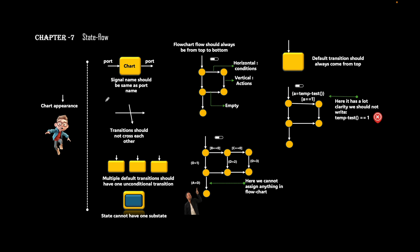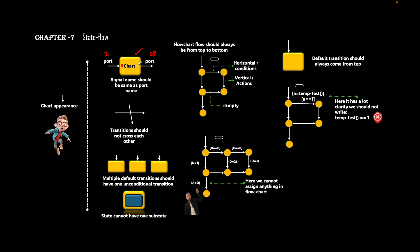Coming to chart appearance: suppose you have a chart at the top level with an input port and an output port. Whatever the name of the input signal connected to it should be the same signal name defined inside the chart. If you define some signal inside the chart as an input, it should have the same name as the input signal. The same applies for the output. This is to avoid confusion and to follow the map guideline.